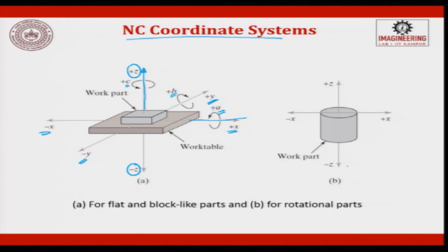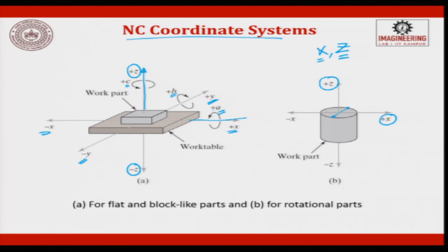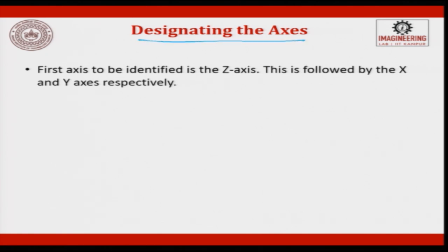This is for a prismatic job. When you go for a cylindrical job, you will not have a y axis because it is diametrically the same — y axis overlaps with x axis. So you will have x axis and z axis only. For a lathe component, z axis becomes the spindle axis and x axis becomes the diametrical axis where you give a depth of cut. The designation of the axis is very important.